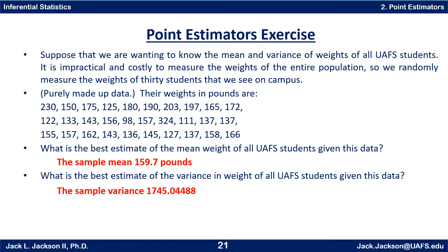We know that the best estimate of the population mean weight is just the mean of the weights in the given sample. Hopefully you computed this correctly as 159.7 pounds, either by adding up the data values and dividing by the number of data values or by using one-variable stats on your calculator. Similarly, the best point estimator of the population variance in weight is the sample variance, which in this case is 1745.04488 pounds squared. The square root of that would be the sample standard deviation, so squaring the s value from one-variable stats on your calculator gives you the sample variance.